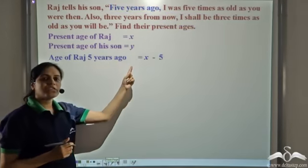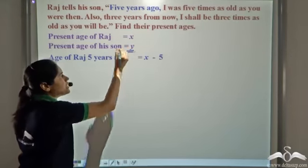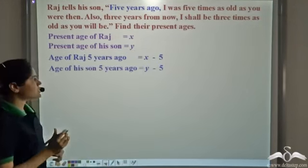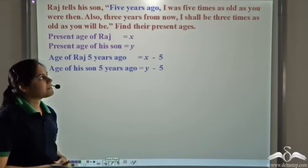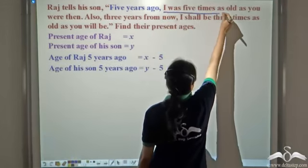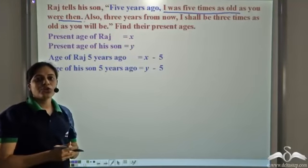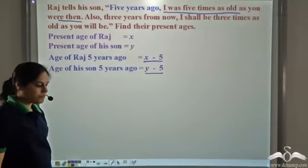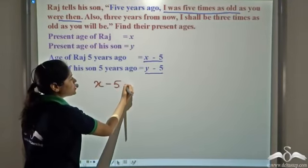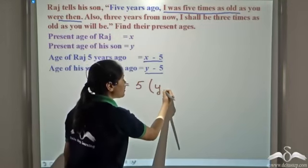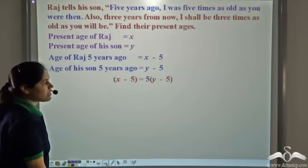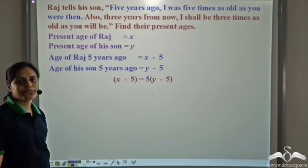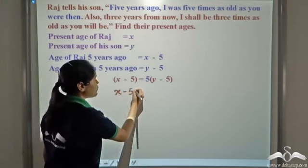So age of Raj five years ago was x minus five. Similarly, age of his son five years ago was y minus five. And Raj says: I was five times as old as you then. So five years ago, Raj was five times as old as his son. So age of Raj was five times y minus five. This gives us: x minus five is equal to five times y minus five.